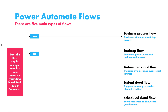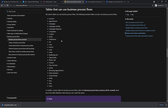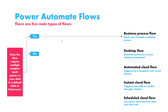But if your company does use Dataverse, and if the task you want to automate is associated with one of those tables in Dataverse, then you can make automating a process very easy by using a Business Process Flow. Business process flows are used in association with Dataverse tables to guide users through multi-step processes.